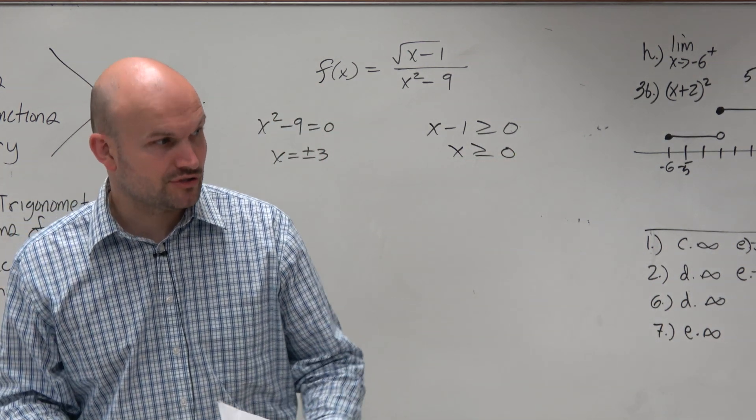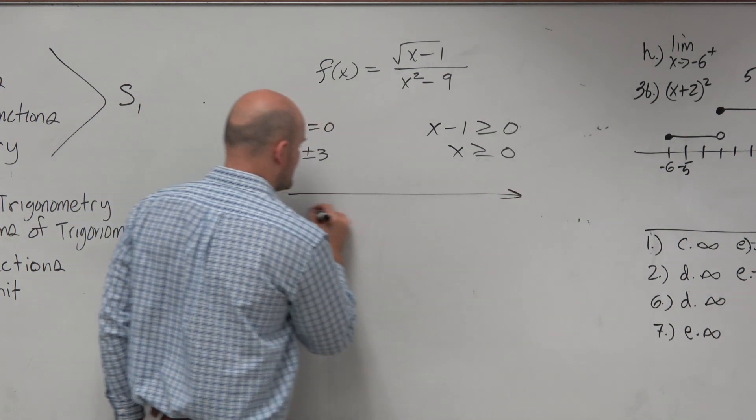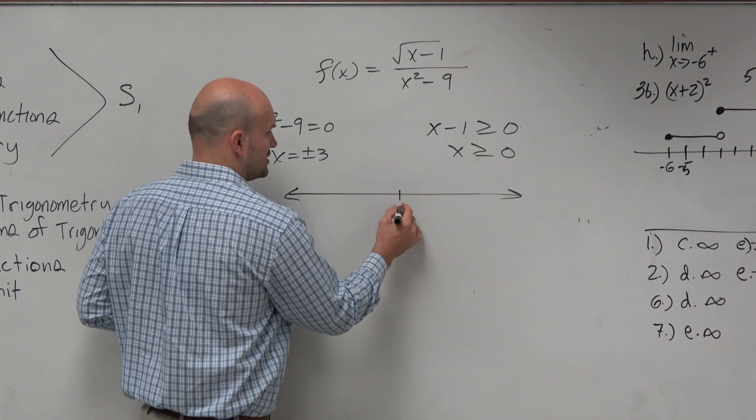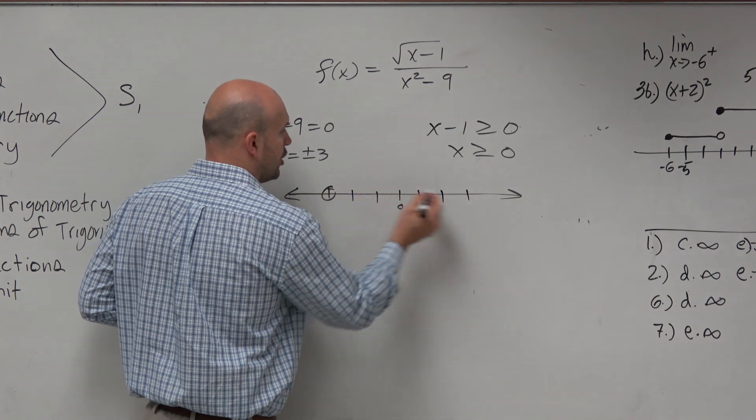Those are our domain restrictions. To help visualize the domain, let's draw a number line. We know it can't equal negative 3 and 3, so we'll mark those as undefined values with open circles.